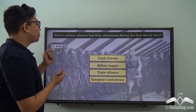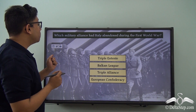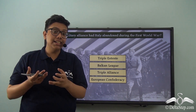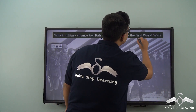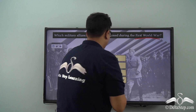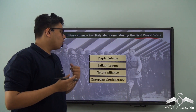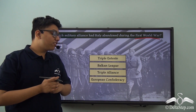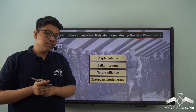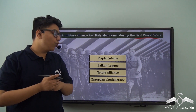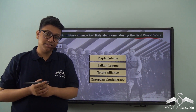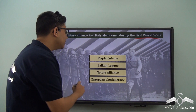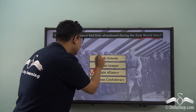Which military alliance had Italy abandoned during the First World War? Was it the Triple Entente, the Balkan League, the Triple Alliance, or the European Confederacy? The correct answer is the Triple Alliance.